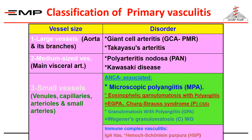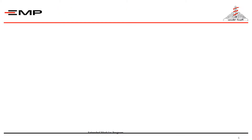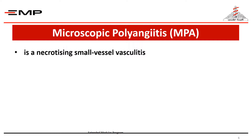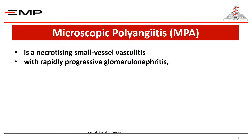The first ANCA-associated vasculitis is microscopic polyangiitis. It is a disease characterized by necrotizing small vessel vasculitis with rapidly progressive glomerulonephritis.